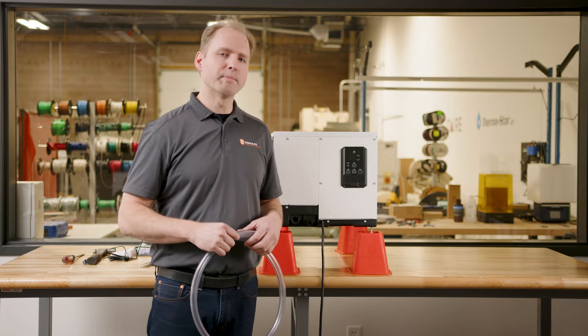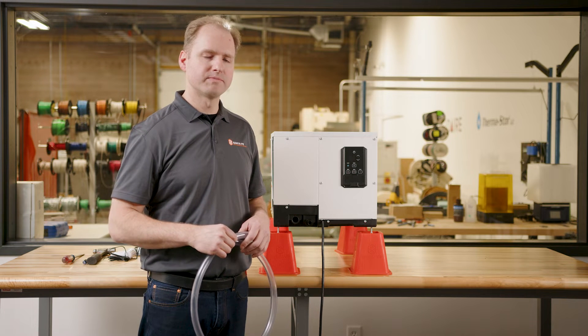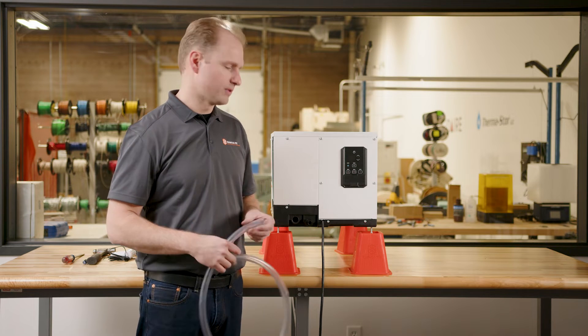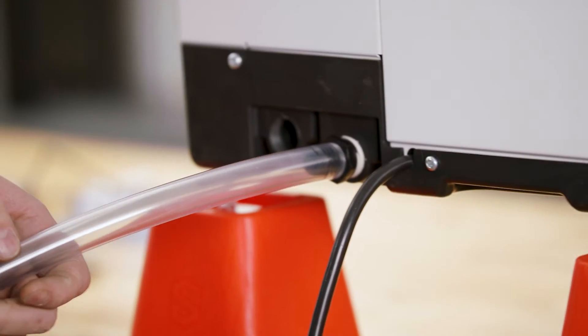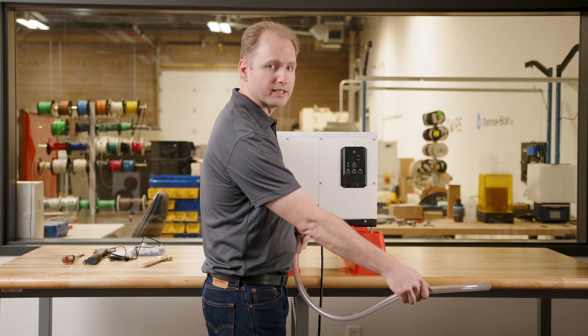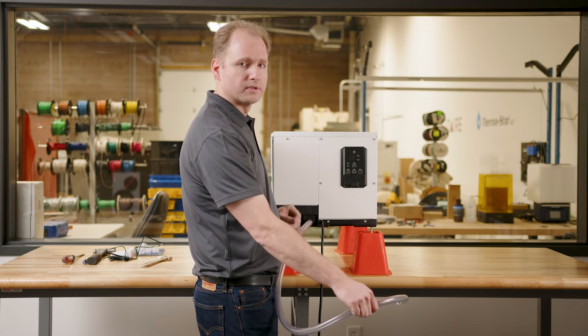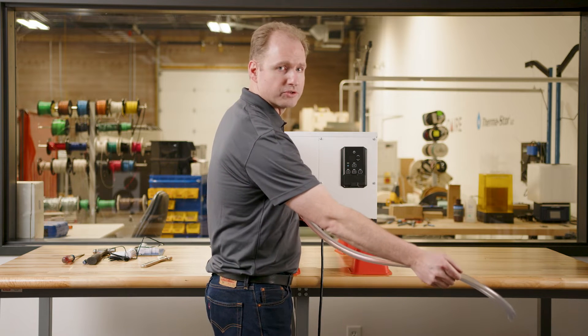This unit also uses a positive pressure drain pan, so a drain trap is not required. Simply install the hose and run the drain line to your drain. Make sure the end of the drain line is not below water and there is a pitch down to the drain.